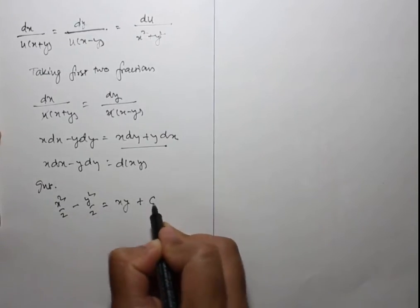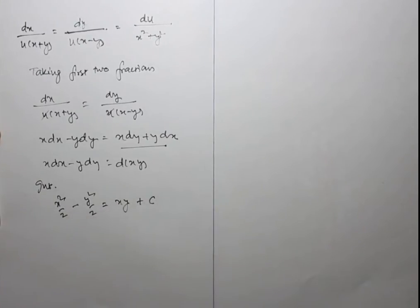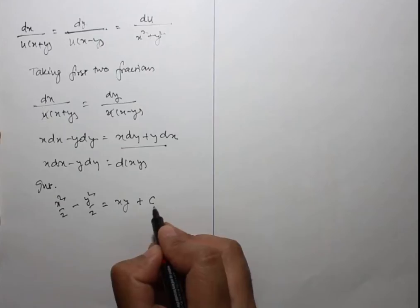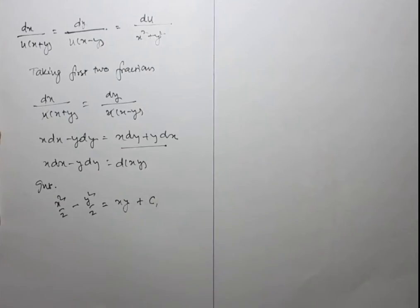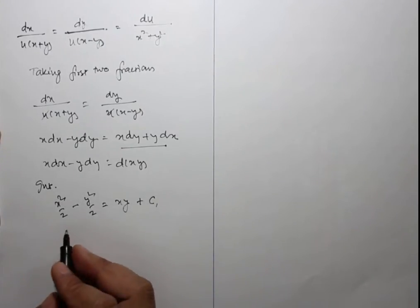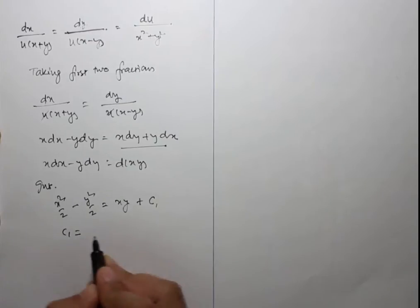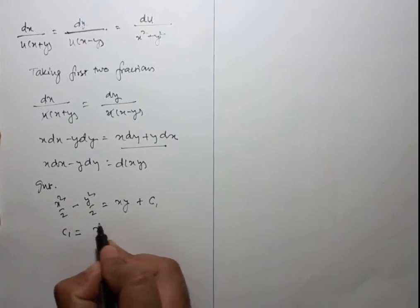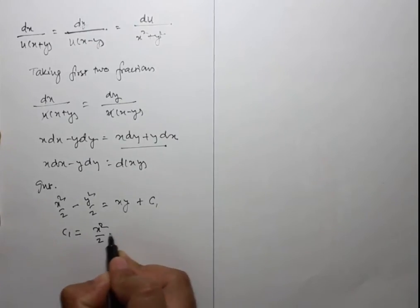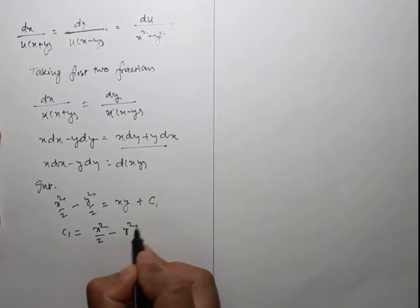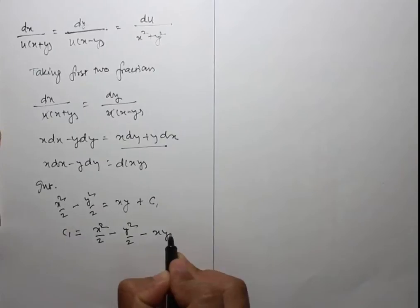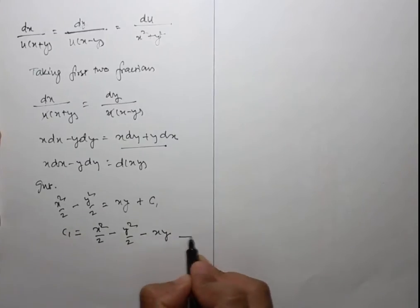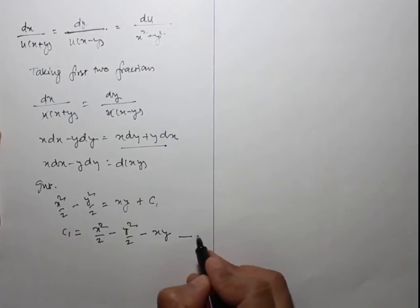Therefore c₁ = x²/2 - y²/2 - xy. This is equation 3.